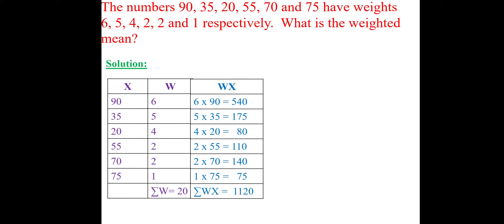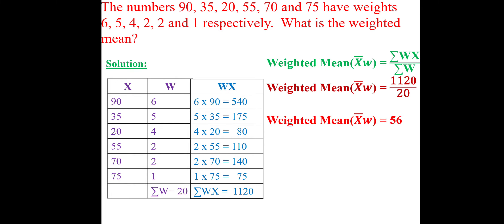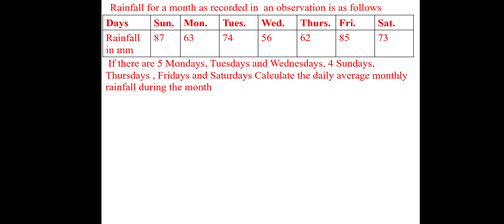Therefore, weighted mean equal to summation WX divided by summation W: 1120 divided by 20. Simplify: 56. This is the way we can follow the weighted mean. Another question: rainfall for a month as recorded in an observation is as follows, days and rainfall in millimeter.